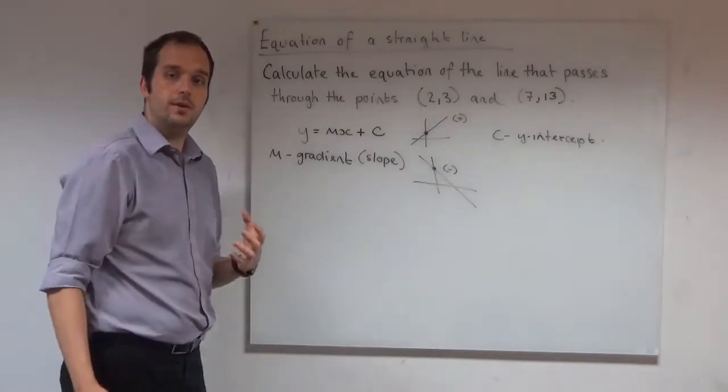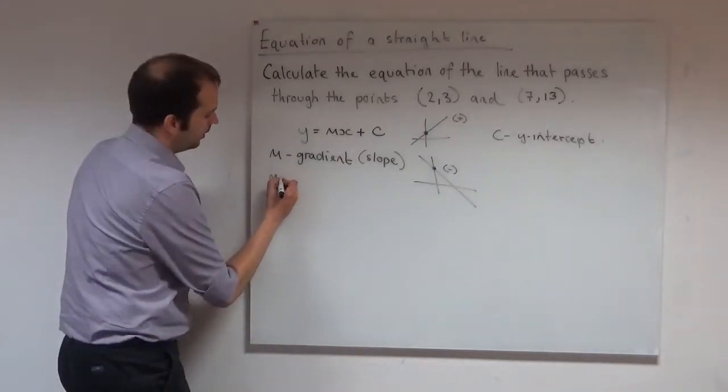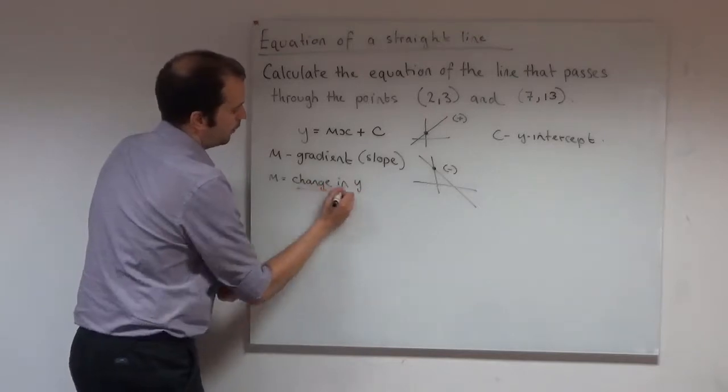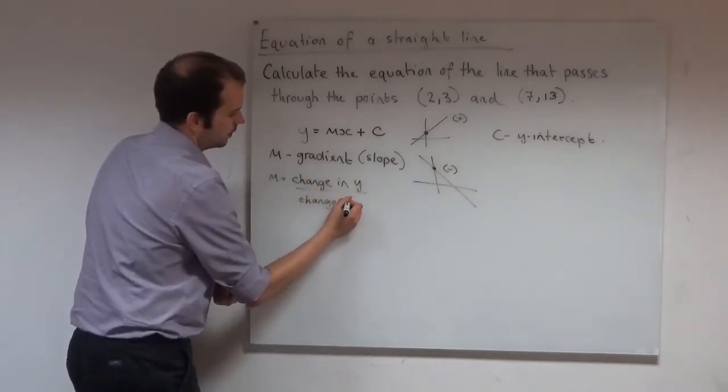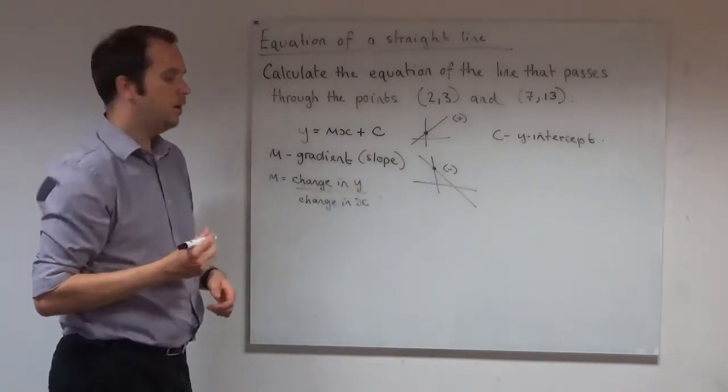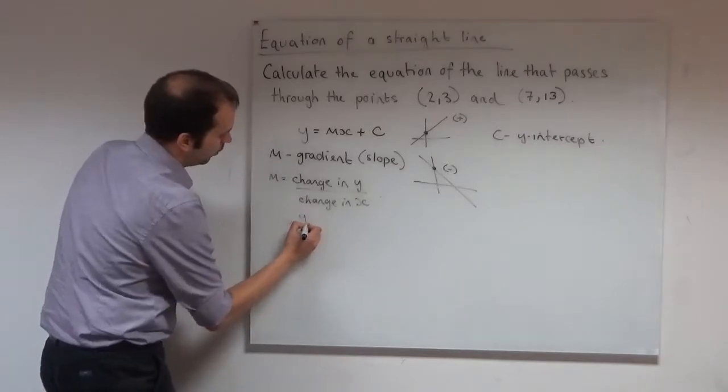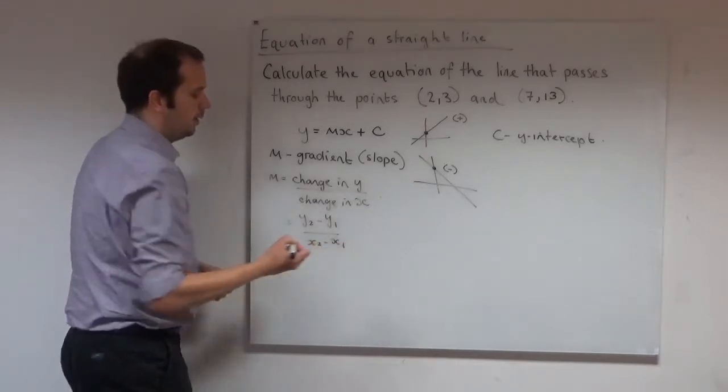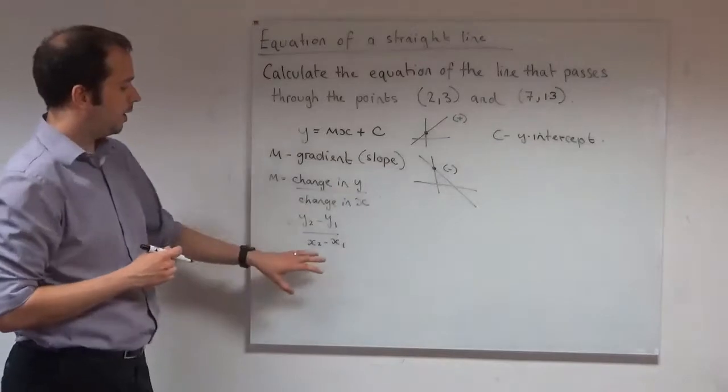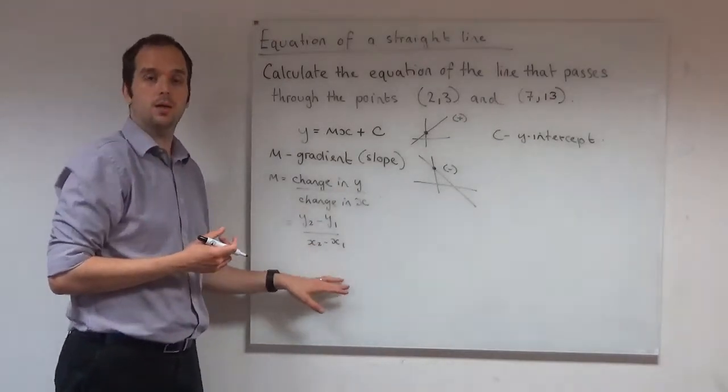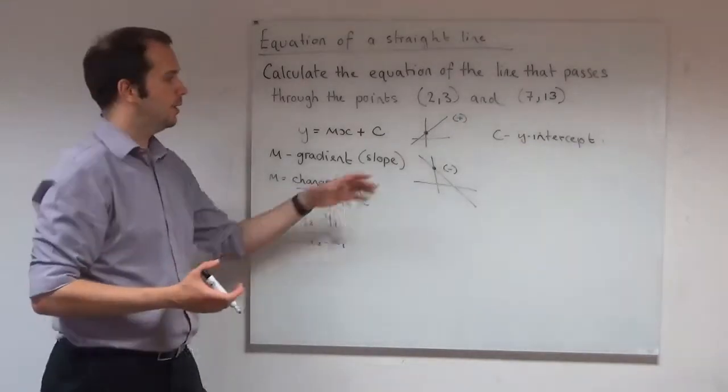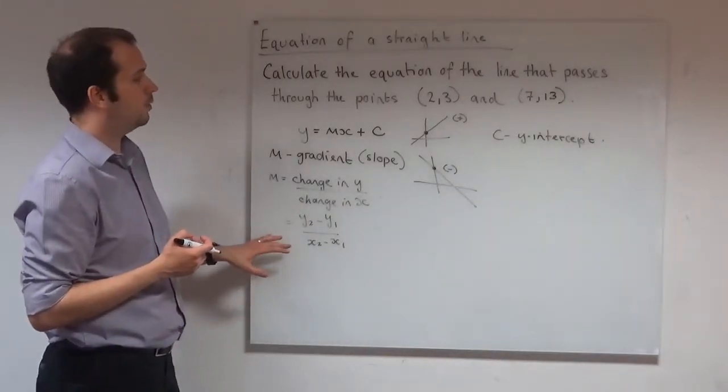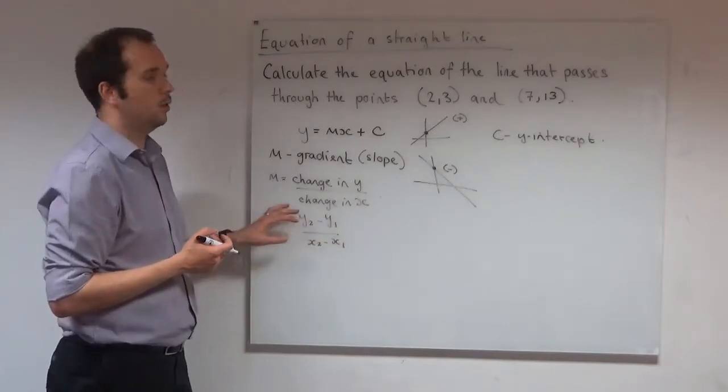And there's an equation we can use to find the gradient. Our gradient is defined as the change in y over change in x. Or you may have seen it written as y2 minus y1 over x2 minus x1. Personally, I prefer the second one. I prefer the y2 minus y1 over x2 minus x1 because you get the sign of the slope correct just by substituting your values in. Now it doesn't matter which one you call x1, y1 or x2, y2 as long as you're consistent.